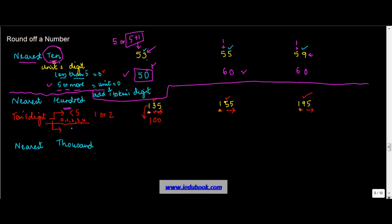When the tens digit is greater than or equal to 5 — meaning 5, 6, 7, 8, or 9 — you put the tens and units digits as 0 but add 1 to the hundreds place. For 155, the tens digit is 5, so it becomes 200. For 195, the tens digit is 9 which is greater than 5, so you put 0 0 and add 1 to the hundreds place, giving 200.